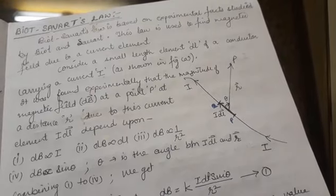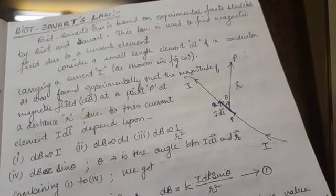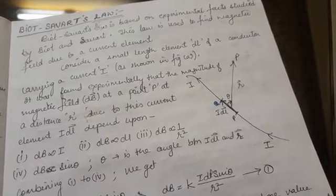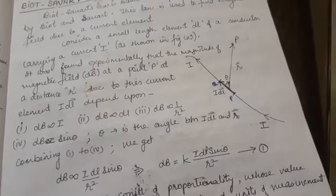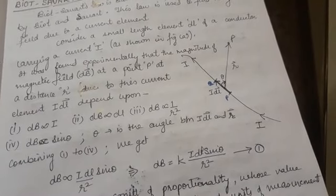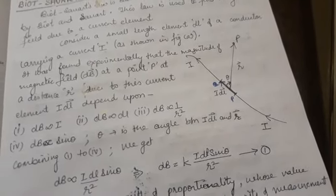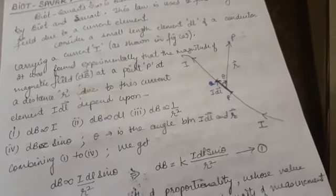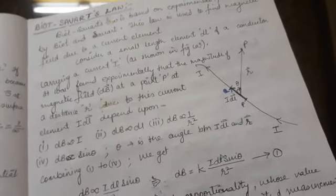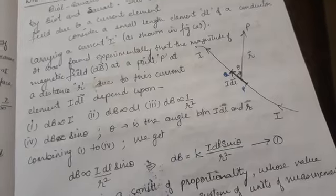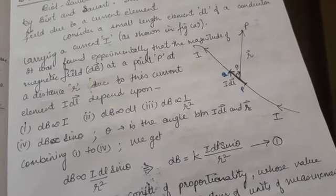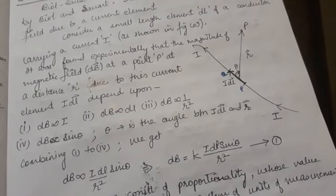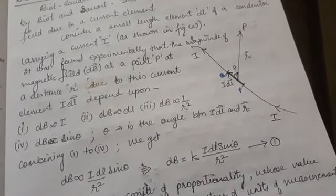This law is used to find the magnetic field due to a current-carrying conductor or current-carrying element. I have considered a current conductor carrying current I, and this conductor has a small length PQ which is equal to DL. So DL when multiplied with I becomes the current element PQ. Due to this current element I DL vector, I can find the magnetic field at point P at a distance R from this current-carrying element.